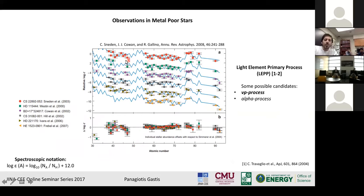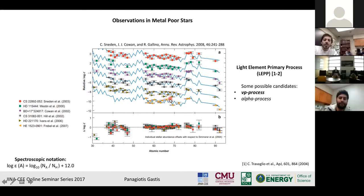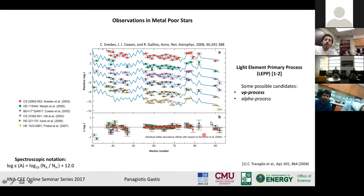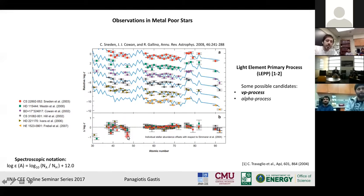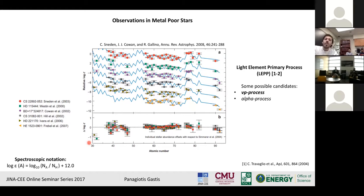In this plot here, we see the observed abundances from six metal-poor stars shown in different colors. In each case, we compare these observed abundances with the expected abundances from the R process shown with blue lines. As we see, the abundances of the heavier elements are in very nice agreement with the expected abundances from the R process. However, this is not the case for the lighter elements, where we see large discrepancies. These discrepancies are also not well explained by the S process, so we have concluded that there must be an additional process responsible for the formation of these elements, called the light element primary process.